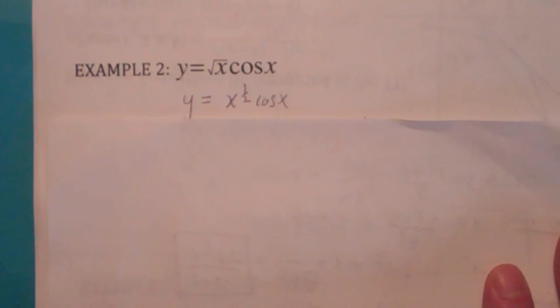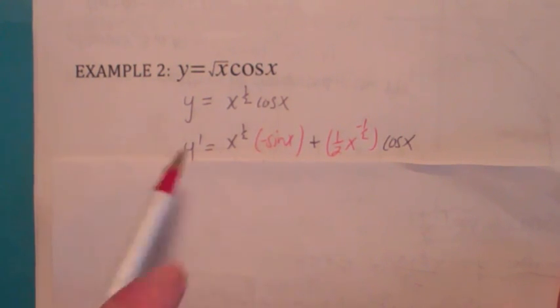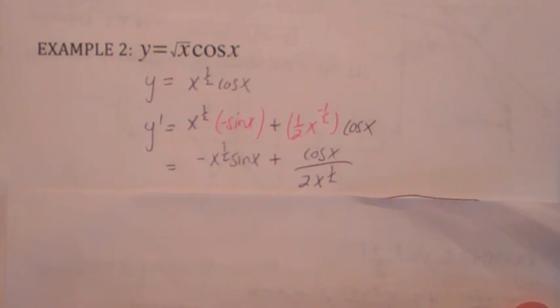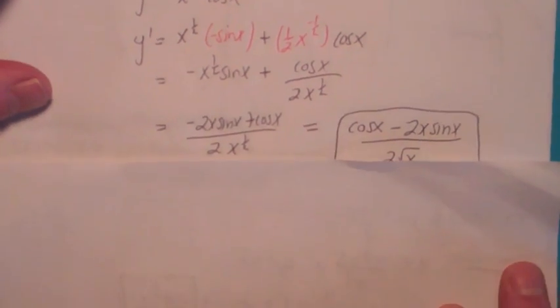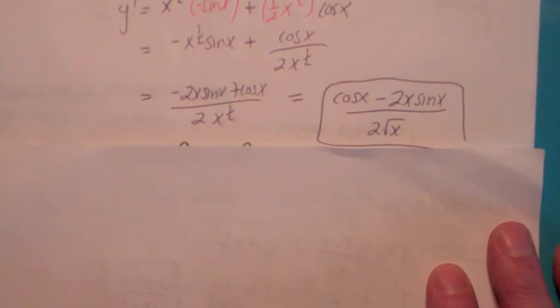Take the derivative of y equals the square root of x times the cosine function. Isn't that a product rule, perhaps? If you first write it with fractional powers, rational exponents, you'd use the product rule. It's the first times the derivative of the second. Don't forget the derivative of cosine is negative sine. Plus the derivative of the first, which becomes 1 half x to the negative 1 half times the second. And if you get rid of the negative exponent, you move the x to the negative 1 half down to the bottom. And your common denominator is 2 times x to the 1 half. So you could write your final answer as cosine of x minus 2x sine x all over 2 square root of x.